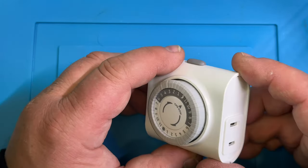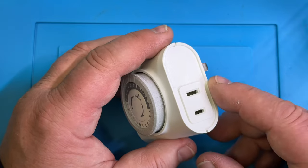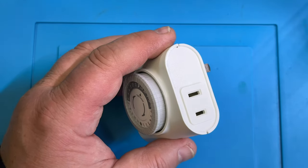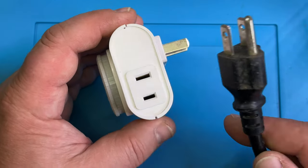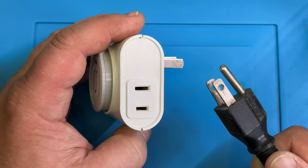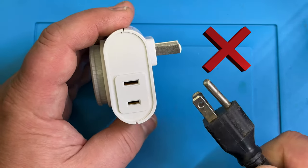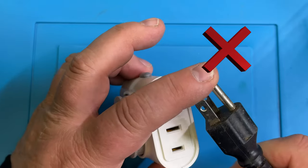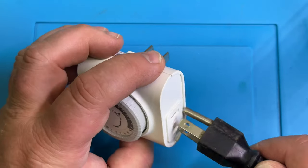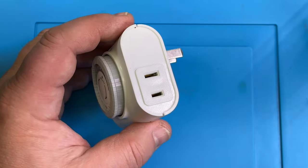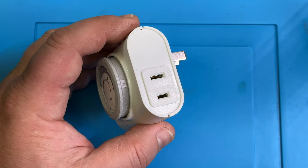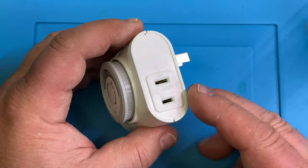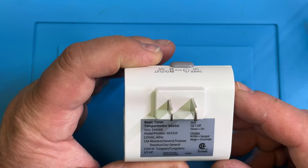Then you would have to plug in the device you want to control. Now you cannot plug into this one a device that needs a lot of power, like for example a hot air gun or a hair dryer, because that will have three prongs and that doesn't fit here no matter how you try.